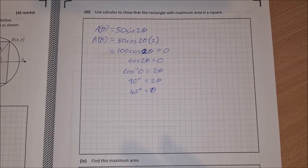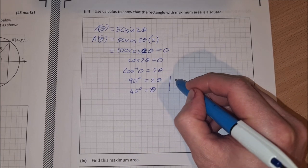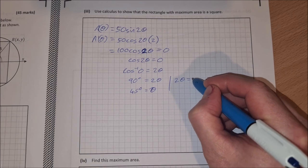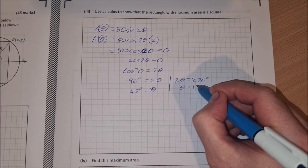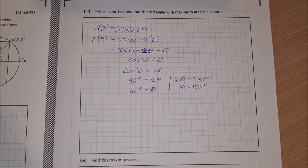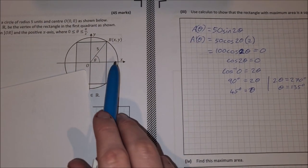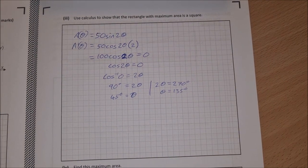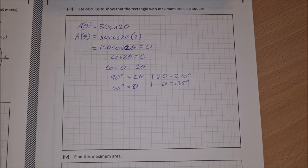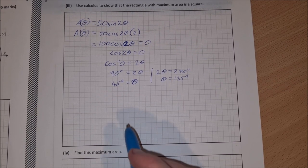Now, you can also, using your reference angle, get 2 theta is equal to 270 degrees and theta is equal to 135 degrees. But we're looking at only values between 0 and 90. So we don't even need to worry about them. So we're just looking at 45 degrees. So if the angle is 45 degrees, then we know it's a square, but we just need to show this.